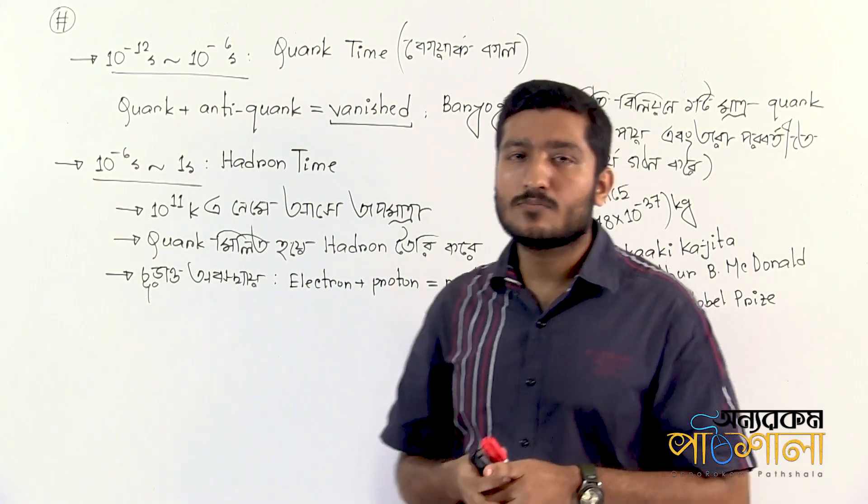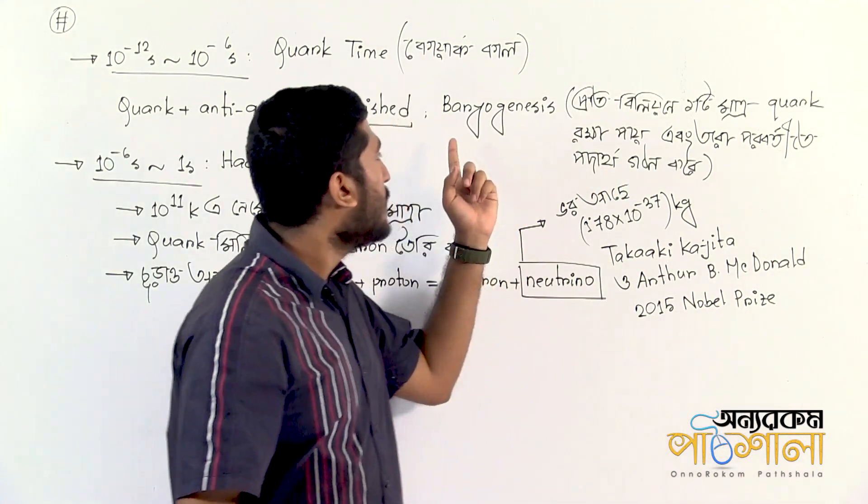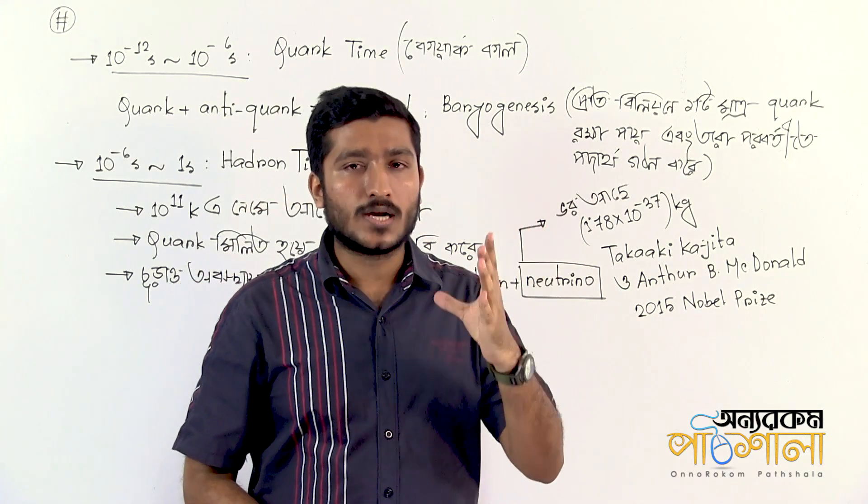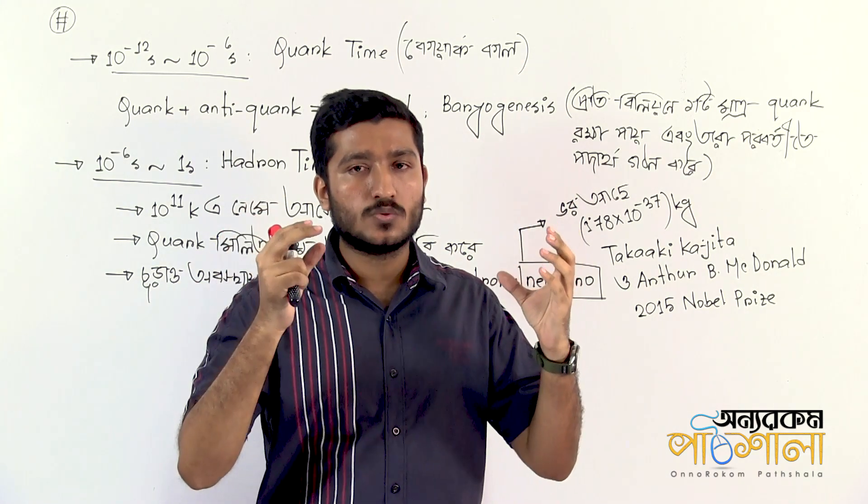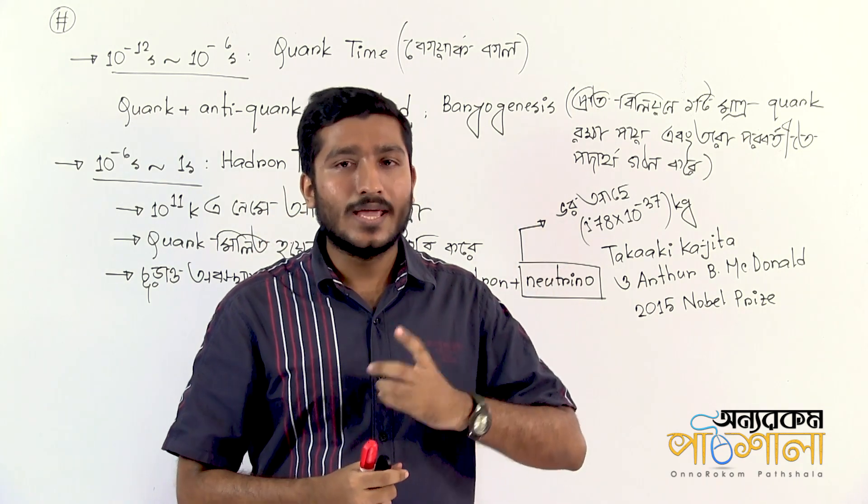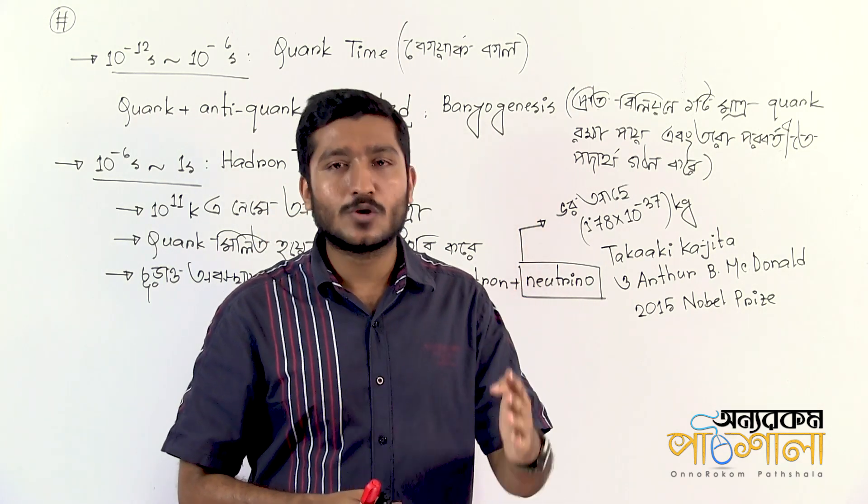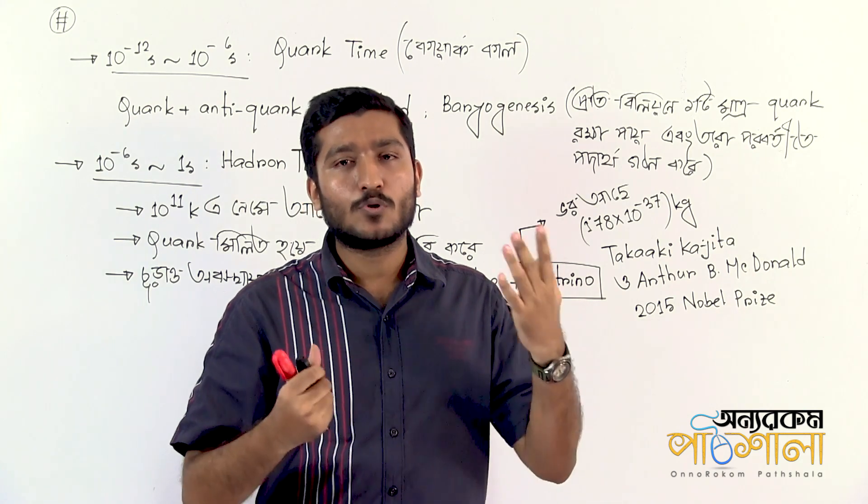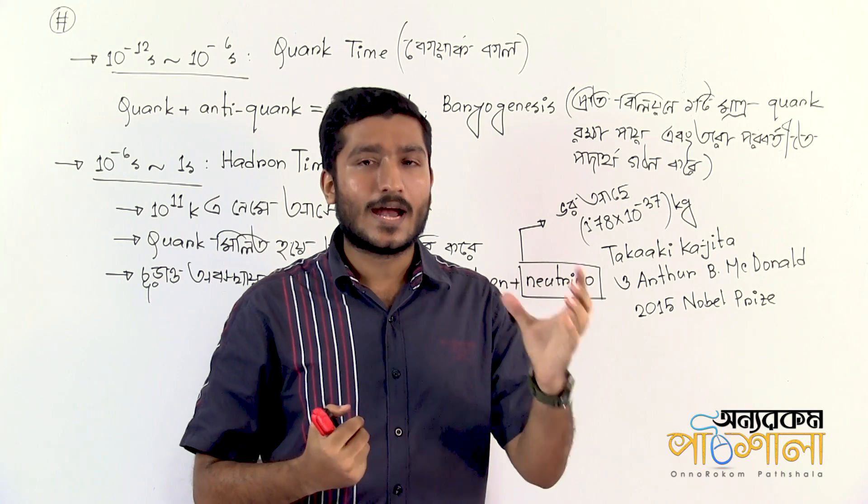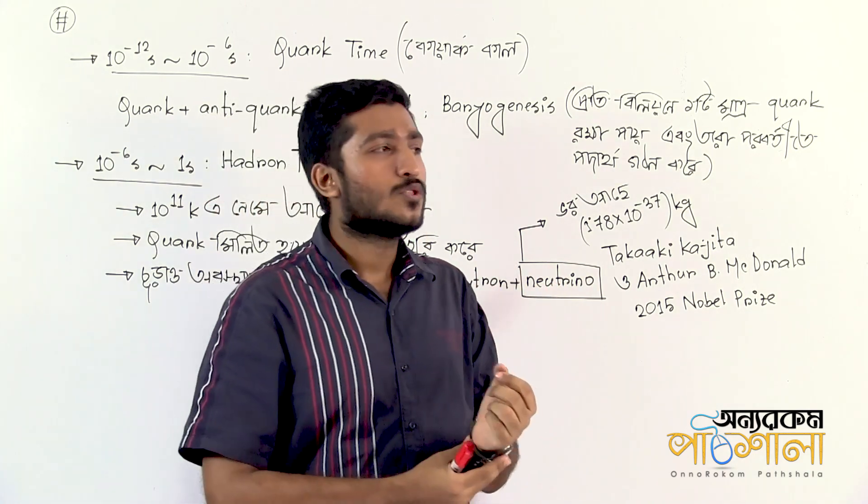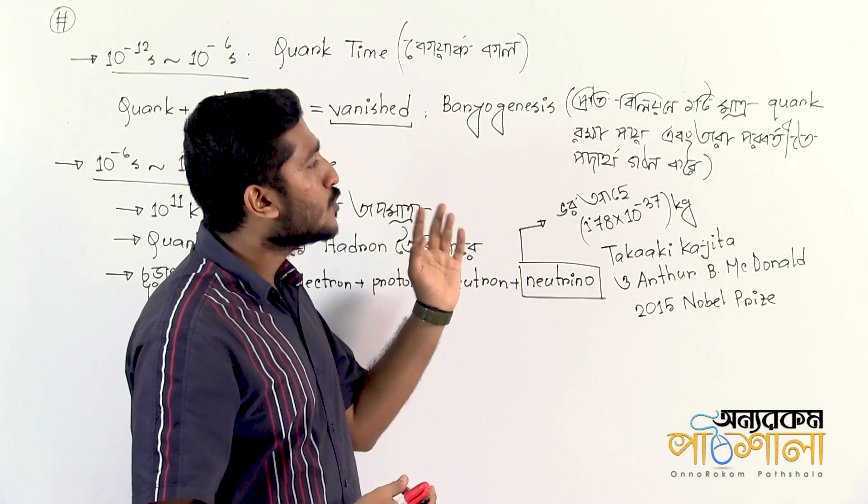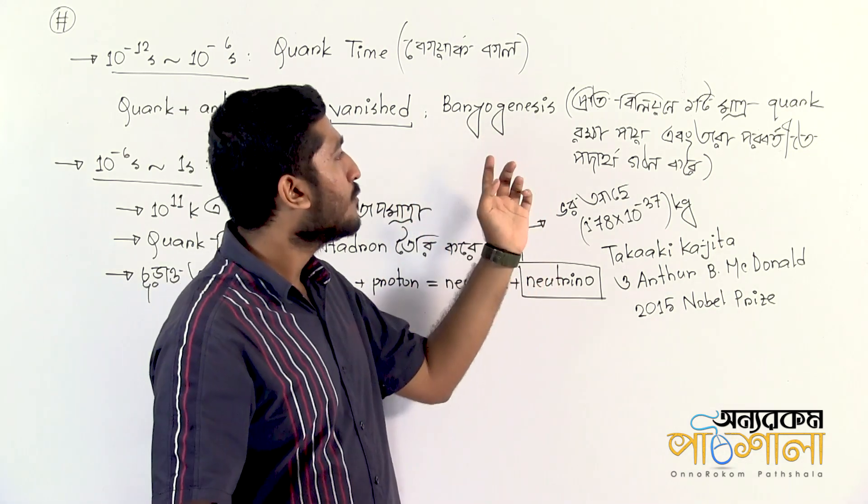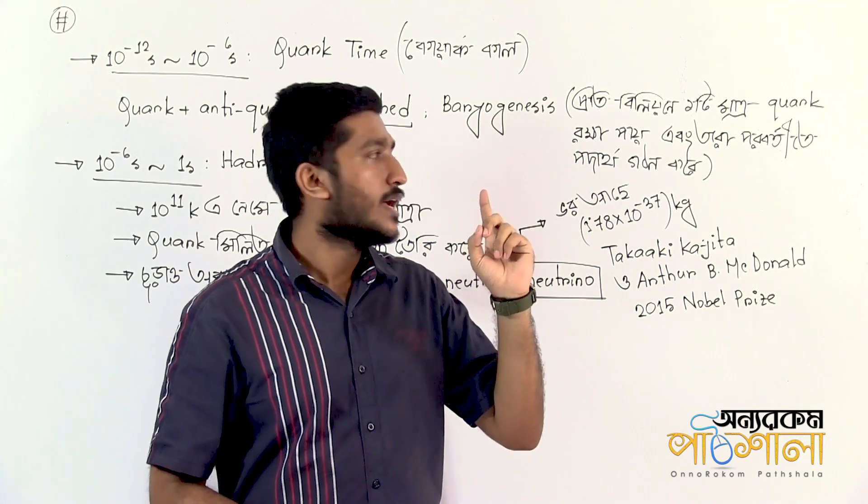There is a specific process called baryogenesis. This process involves quarks and anti-quarks, where certain interactions lead to the dominance of matter over antimatter that we observe today. The quark-antiquark imbalance becomes significant during this era.